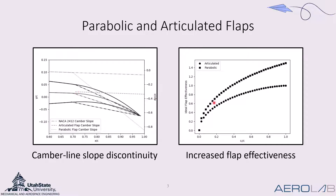On the right is shown the ideal flap effectiveness compared between these two flaps. The articulated flap increases up to about 1, and the parabolic flap increases up to around 1.4. Thus, for every flap chord fraction, the parabolic flap is more effective than the articulated flap. Due to the decrease in drag and increased flap effectiveness of the parabolic flap, we designed our morphing airfoils with the parabolic flap in mind.